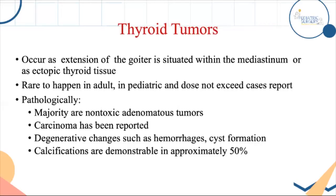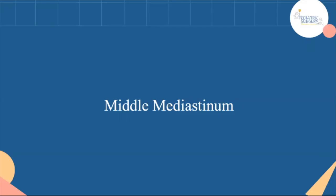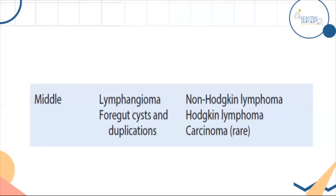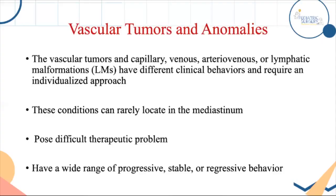Thyroid extending into the chest is very rare in pediatrics. Regarding the middle mediastinum: lymphangioma and foregut cysts are the main focus. Vascular anomalies — hemangioma or lymphatic malformations — are located throughout the body, rarely isolated to the mediastinum, and range from stable and small to progressive and large.